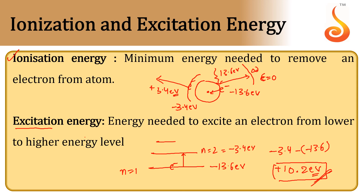Furthermore, if I want to move an electron from n = 2 to n = 3, where the energy of the electron is minus 1.5 electron volts, then the difference between these two energy levels will be considered as the excitation energy.